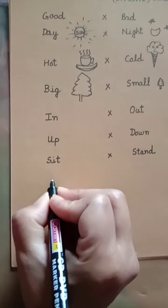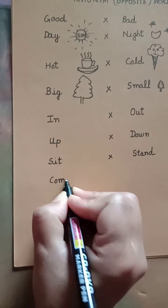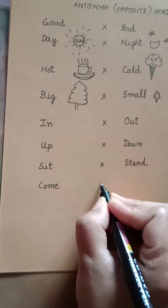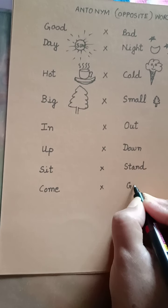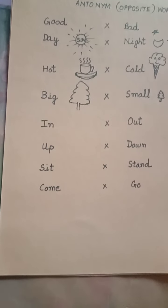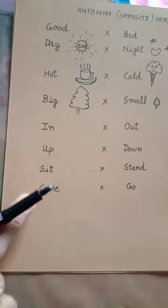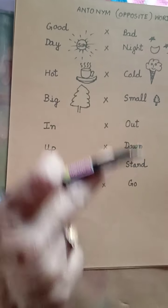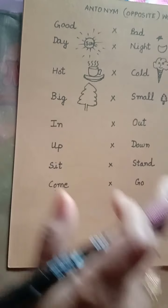Next word is C-O-M-E, come. Come means aana. The opposite of come is go. Go means jana. We say come in or go out. Come in means andar aao — in means andar. Go out means bahar jao — out means bahar.